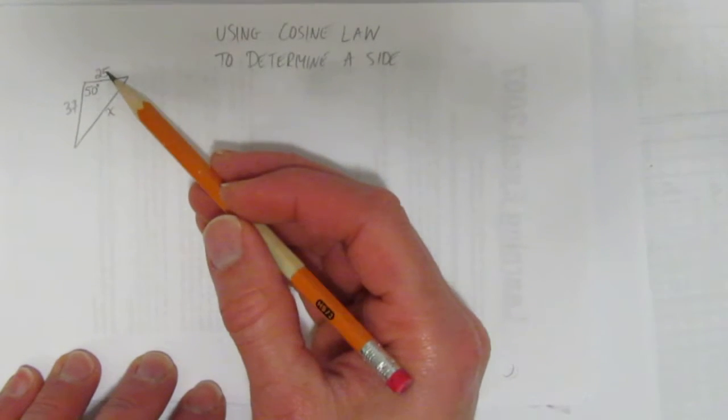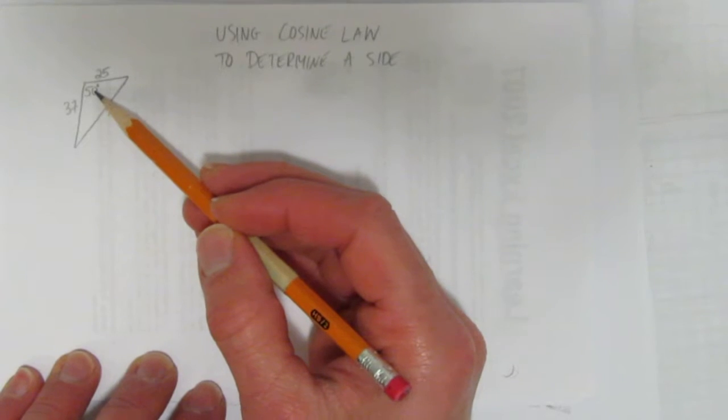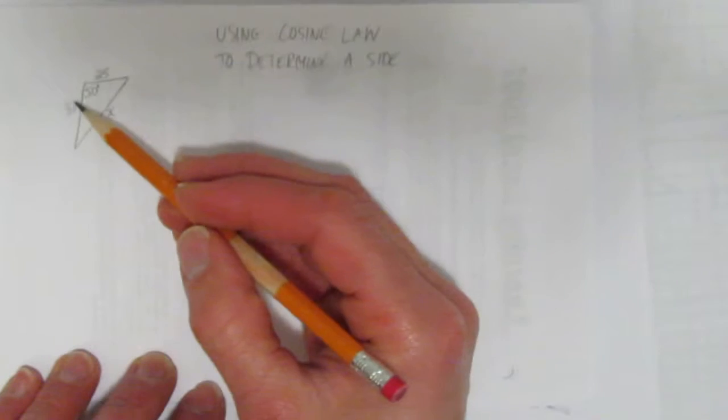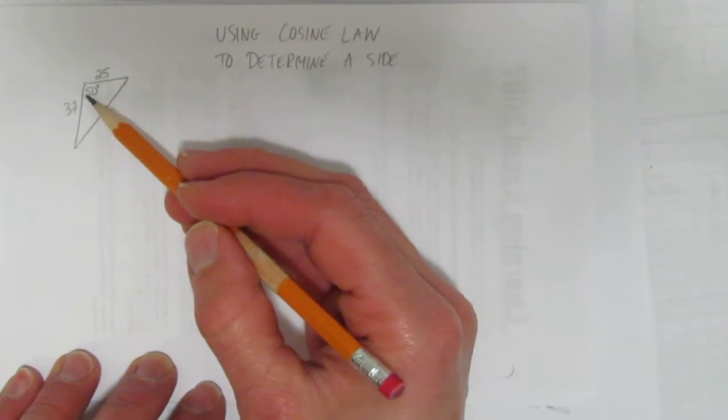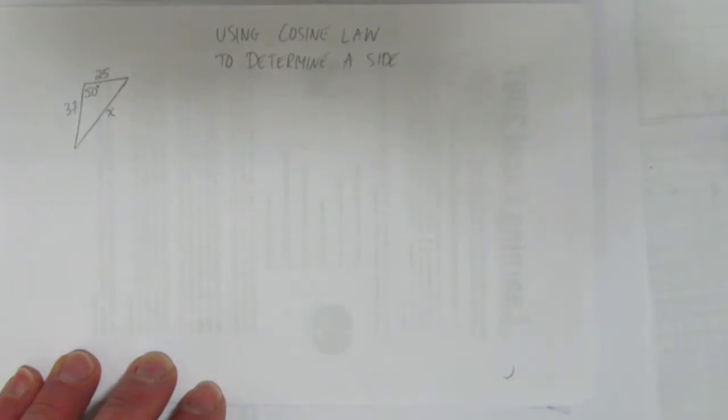The important thing is you use cosine law in this situation because you have side-angle-side where the angle is between. If the angle was not between, it would be a case for sine law, but because we have side-angle-side with the angle between, it's a cosine law situation.